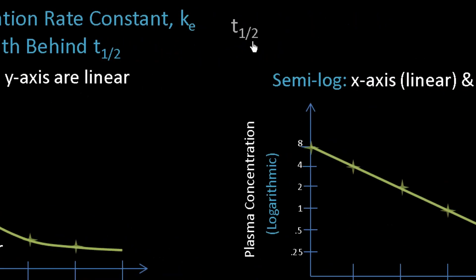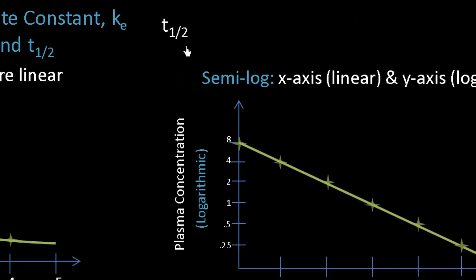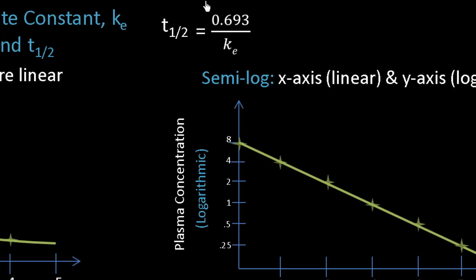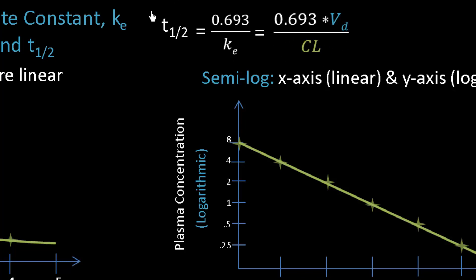We said that the half-life was inversely proportional to this first order elimination rate constant — so the faster you metabolize or eliminate drugs, the shorter the half-life. While you don't have to memorize the base equation, you should memorize the equation that is derived from it.